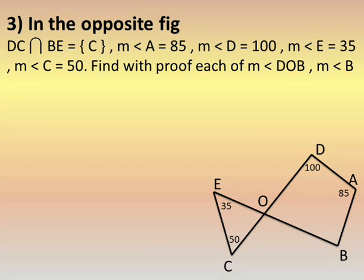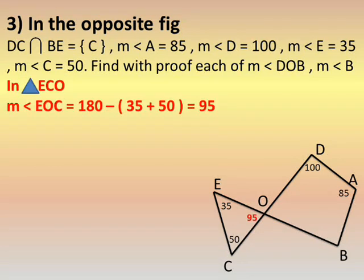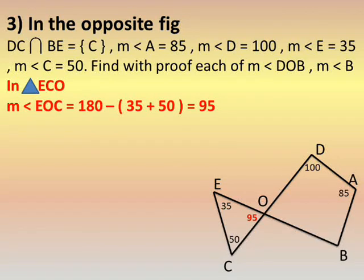Number three: DC intersects BC. Given: measure of angle A equals 85, measure of angle D equals 100, measure of angle E equals 35, measure of angle C equals 50. Find with proof: measure of angle DOB and measure of angle B. We have two figures — a triangle and a quadrilateral. For the triangle, two angles are given and we find the third using the fact that the sum of interior angles of any triangle equals 180.